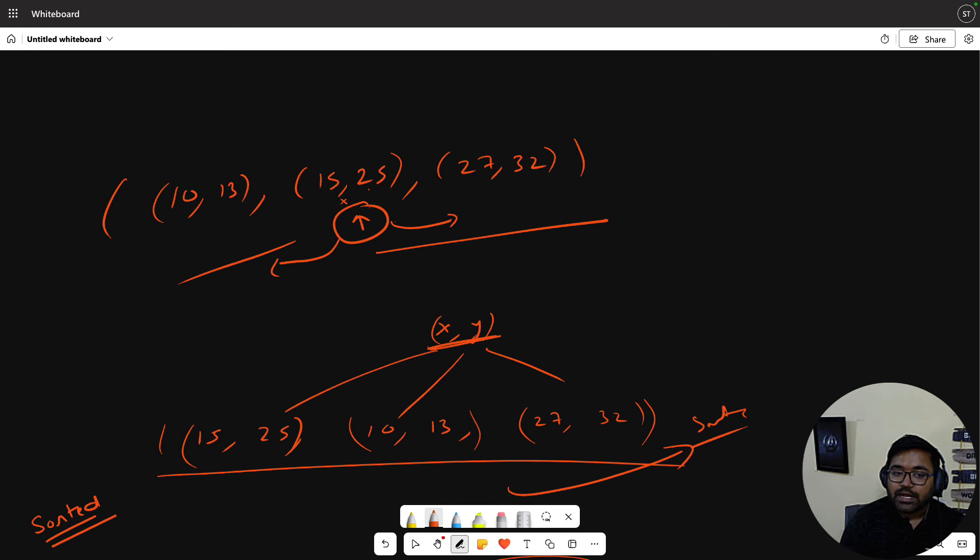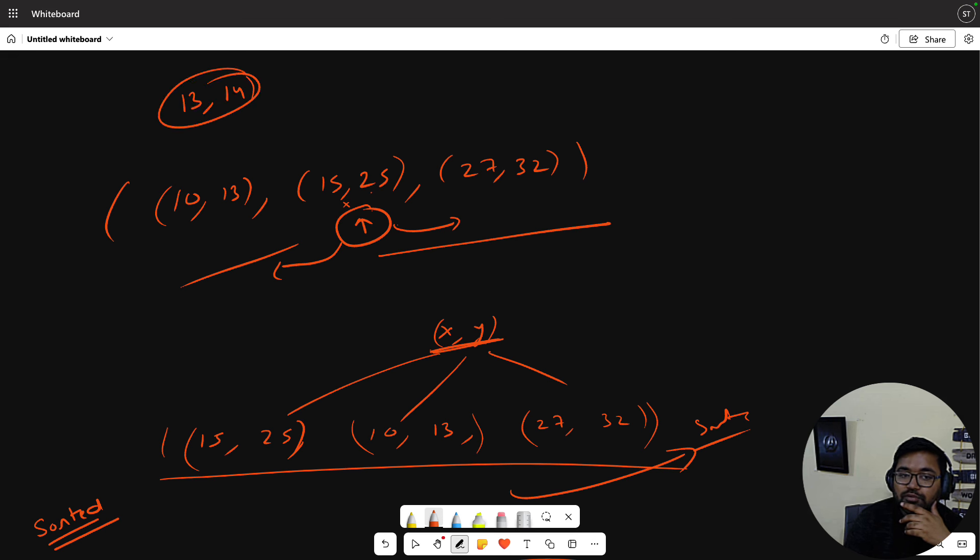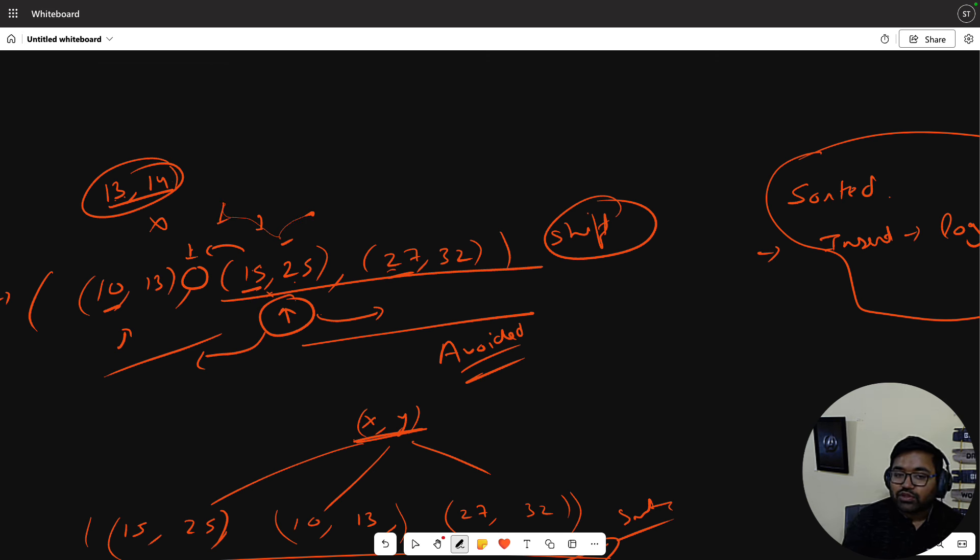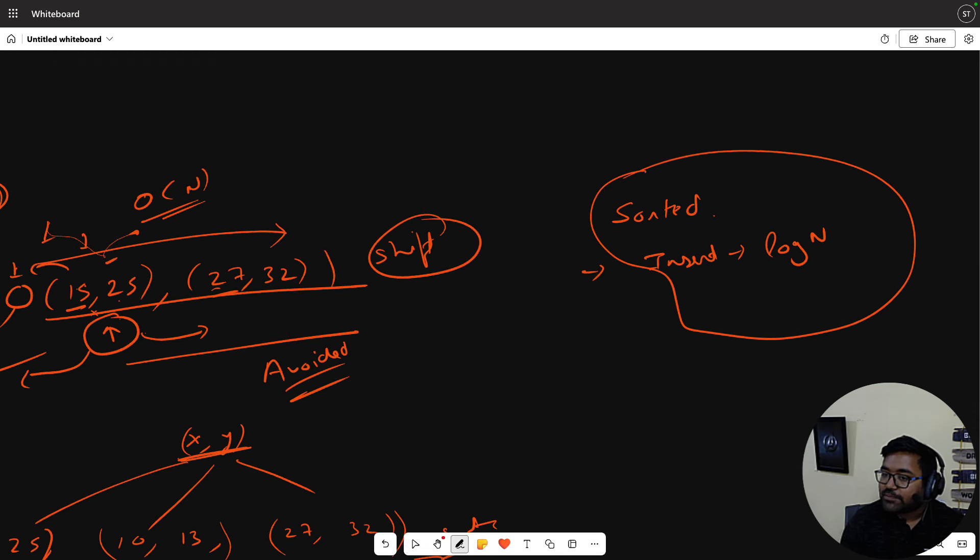For example, if you insert 13,14 and I basically sort by start time, now we compare. You will see 13,14 lies before 15, and there is no overlap so you can insert. The problem here is insertion, then you have to shift elements. This shifting can be avoided by using a data structure that maintains sorted form and has logarithmic insertion time.